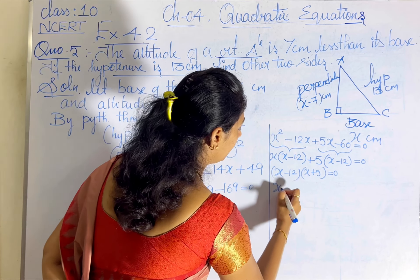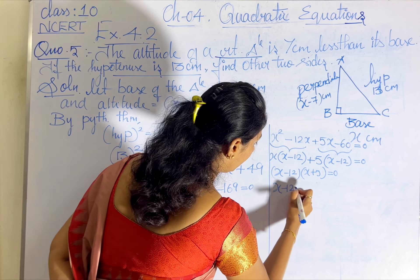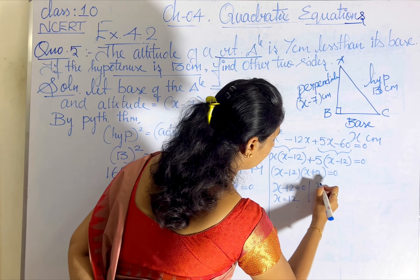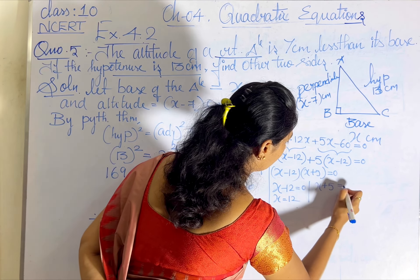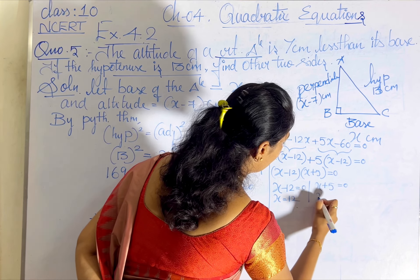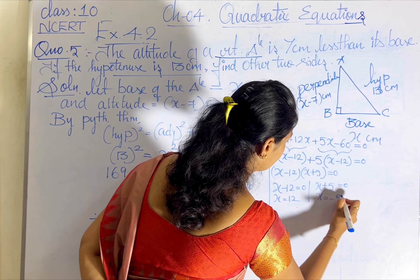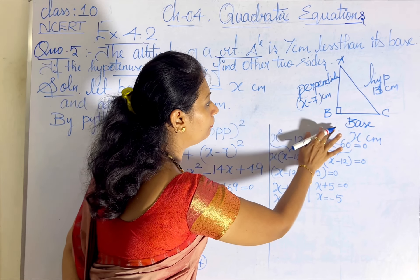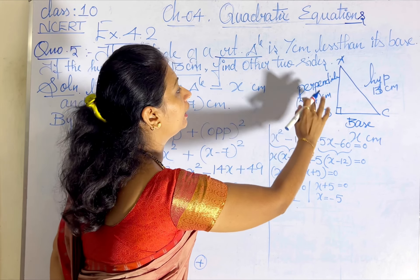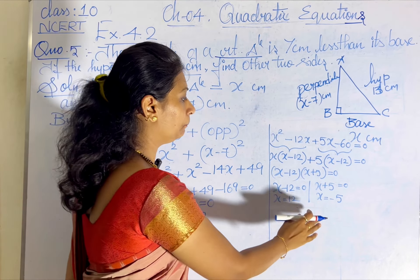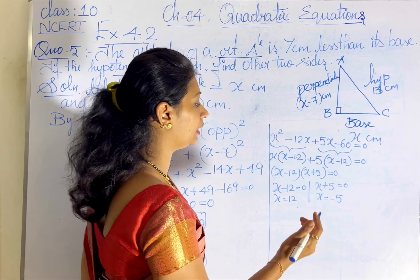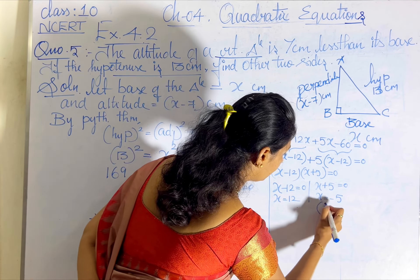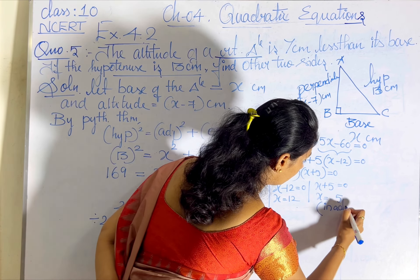The zeros are x minus 12 equals 0, giving x equals 12, and x plus 5 equals 0, giving x equals minus 5. Since we assumed x as the base and height of the triangle, and base and height can never be negative, x equals minus 5 is inadmissible.